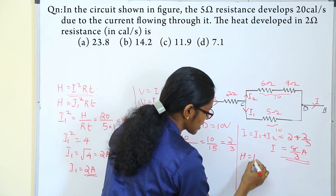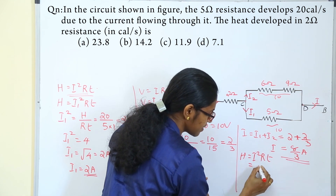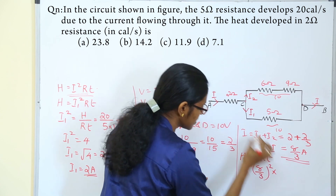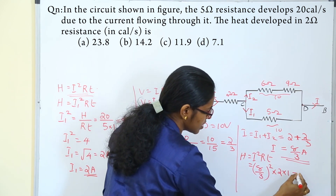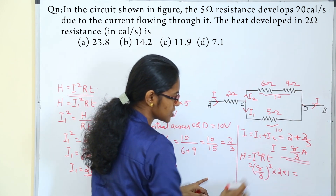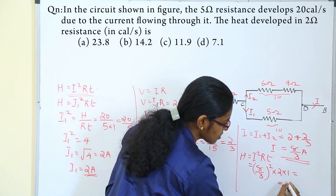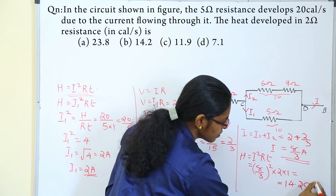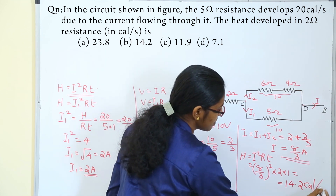Therefore, H is equal to I squared R T. With I equal to 8 by 3, we get 8 by 3 all squared, times resistance 2, times time 1. That equals 14.2 kilocalories per second.